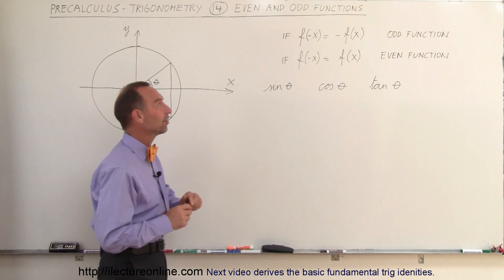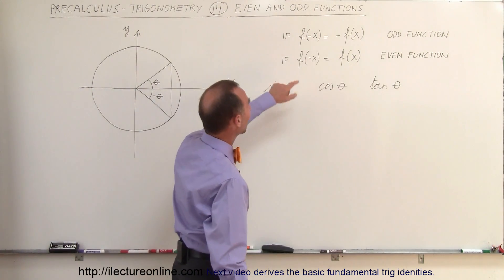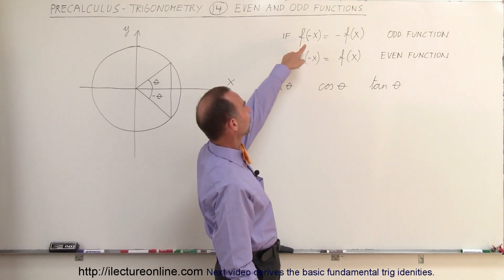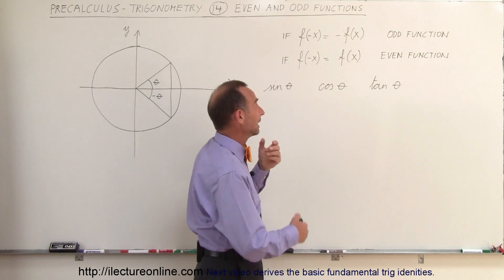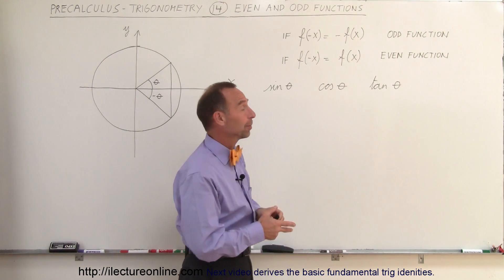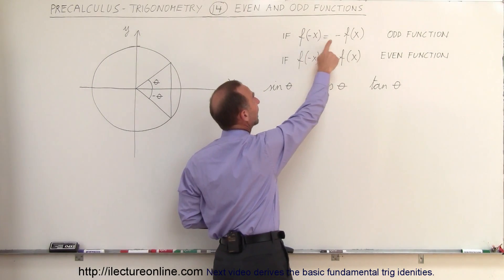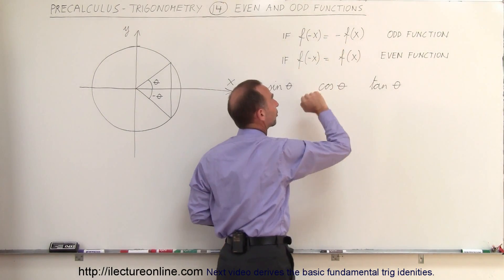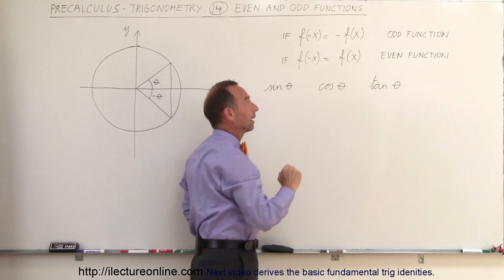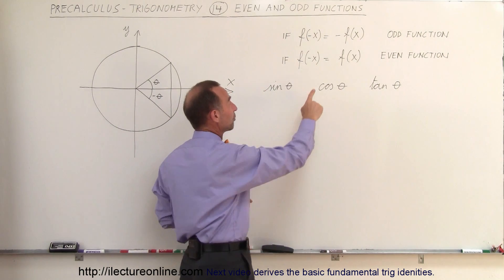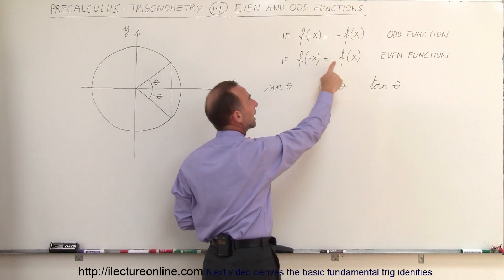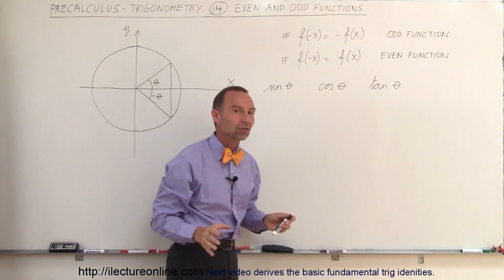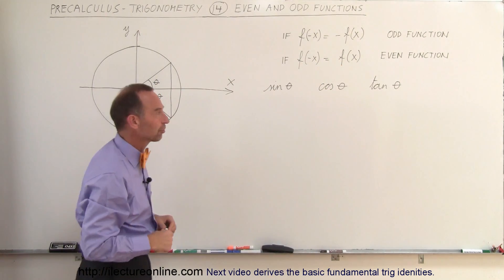To remind ourselves, an odd function is a function such that when you replace the independent variable by the negative, you get the negative of the function. An even function is a function where if you replace the independent variable by a negative, you get the same function back — that's called an even function.